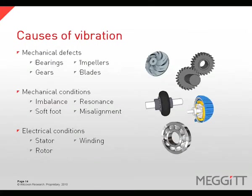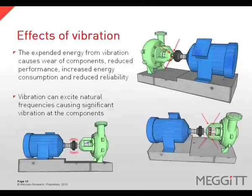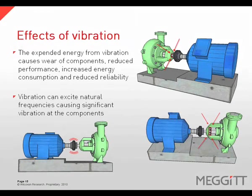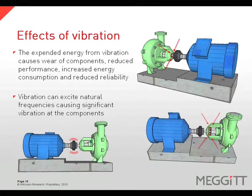There are many causes of vibration, including mechanical defects such as bearing damage or broken gears, mechanical conditions such as resonance or misalignment, and electrical conditions such as electric motor defects. Vibration can have negative effects on equipment — the expended energy from vibration causes wear of components, reduced performance, increased energy consumption, and reduced reliability. Vibration can also excite natural frequencies, causing significant vibration at the components.